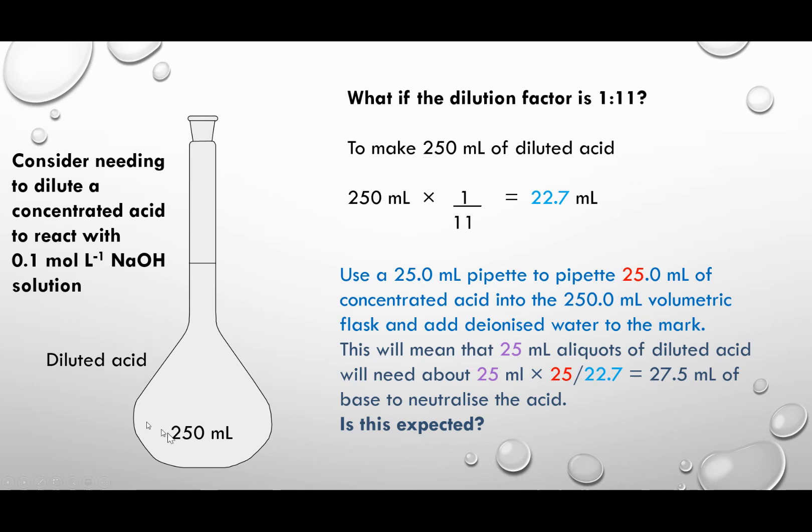And so our dilution factor is 1 is to 11, so we take our 250 mL that we want to make up, divide it by 11, and that means we need 22.7 mL of vinegar to add to here and make up to the mark.